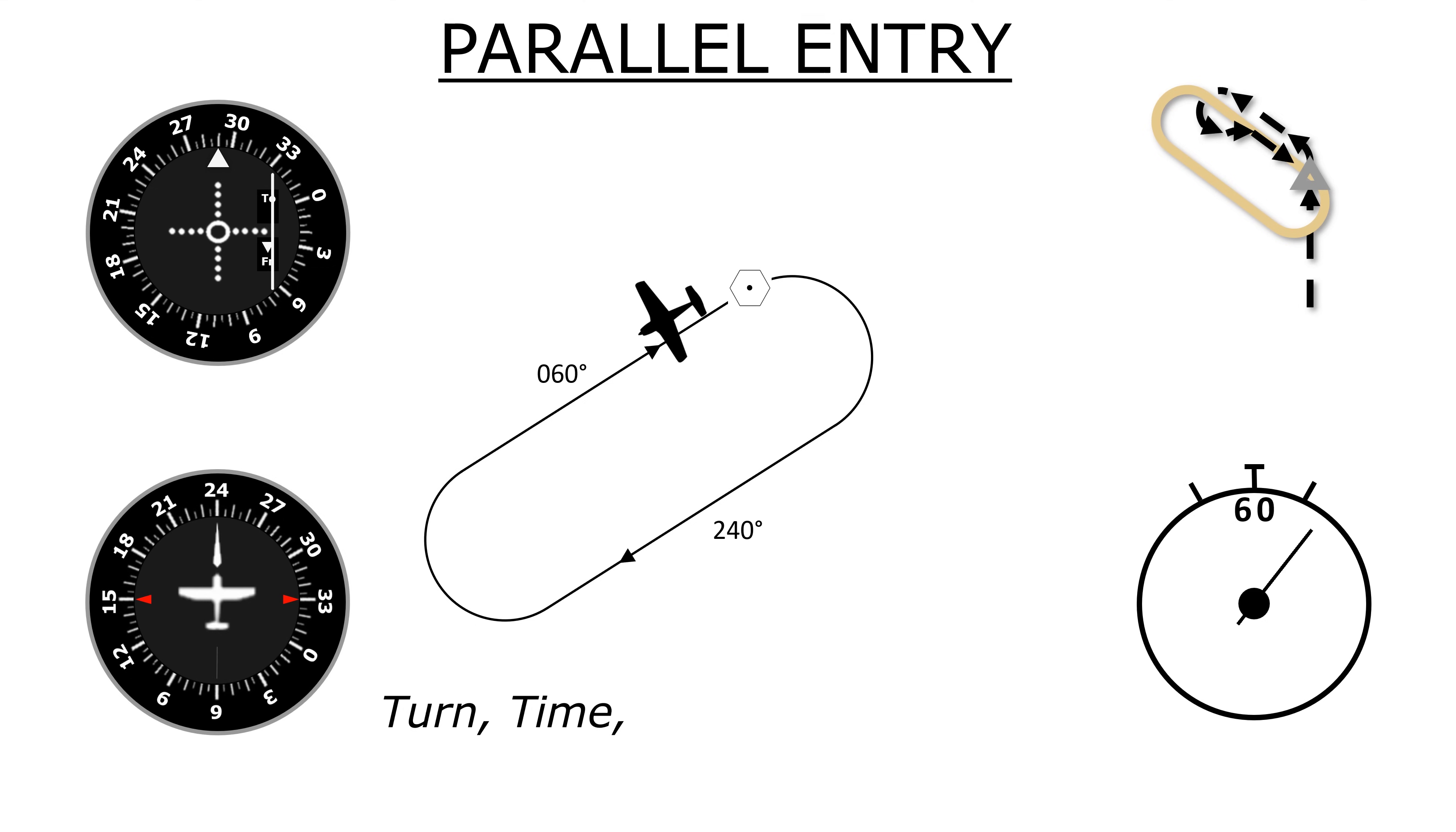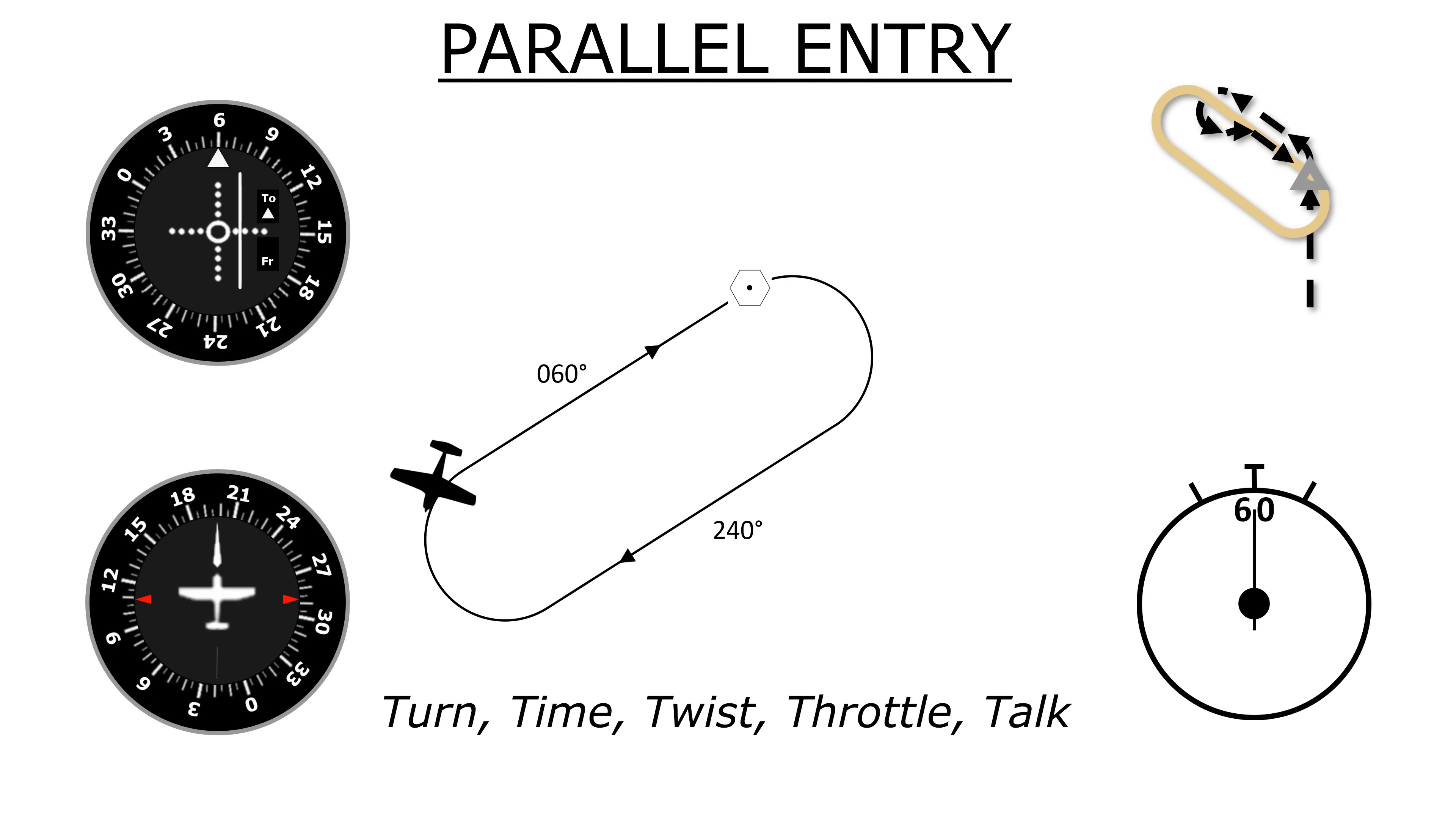When the FROM flag comes on, we'll time a minute outbound. Let's twist the VOR to our inbound heading of 060. After the minute, we'll make a left turn to our intercept heading, which will put us on a 030 heading to intercept the inbound course. As the needle centers and we intercept, we'll turn right heading 060 and track inbound.